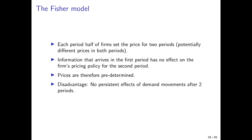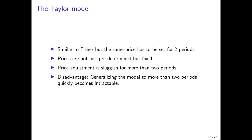This means that prices are predetermined and there is some sluggishness in price adjustments. The disadvantage is that there are no persistent effects of certain demand movements and shocks after two time periods — the rigidity only lasts for two periods. A modification of that is the Taylor model, where the assumptions are basically similar to the Fisher model, except that the same price has to be set for two time periods. In this case, prices are not just predetermined but fixed, so they cannot change. The price adjustment is therefore sluggish for more than two periods. The disadvantage is that it is difficult to generalize the model to more than two time periods, and it quickly becomes intractable.